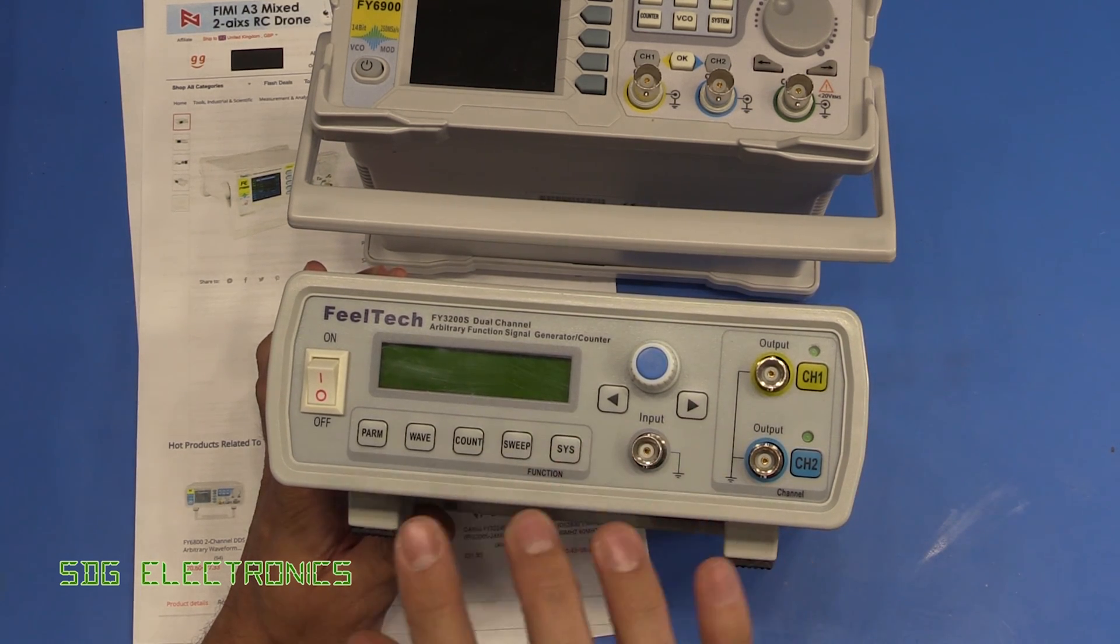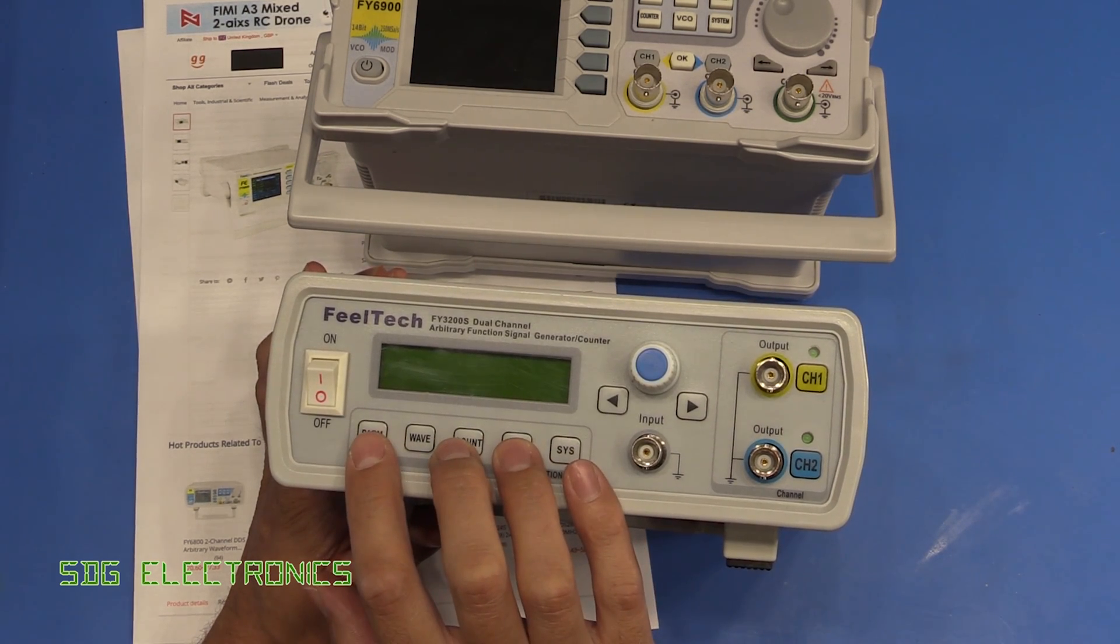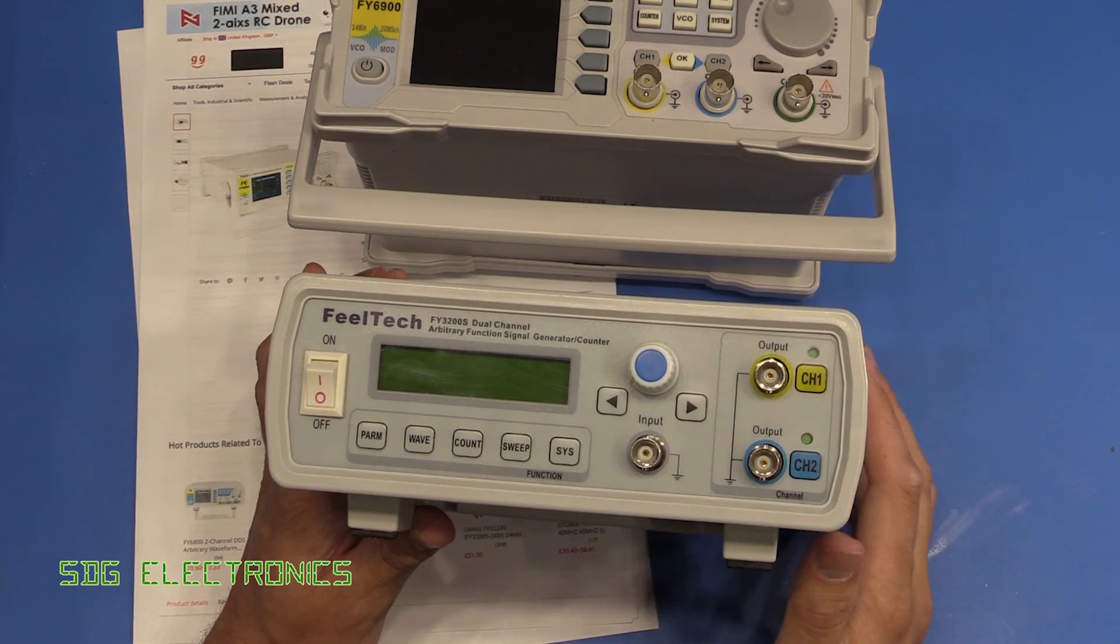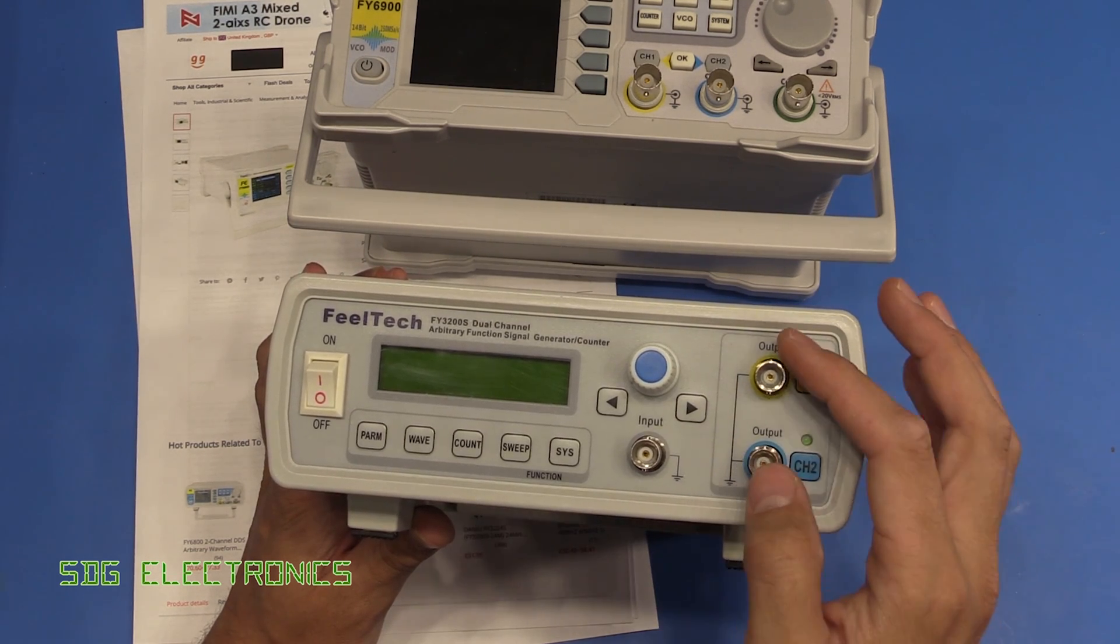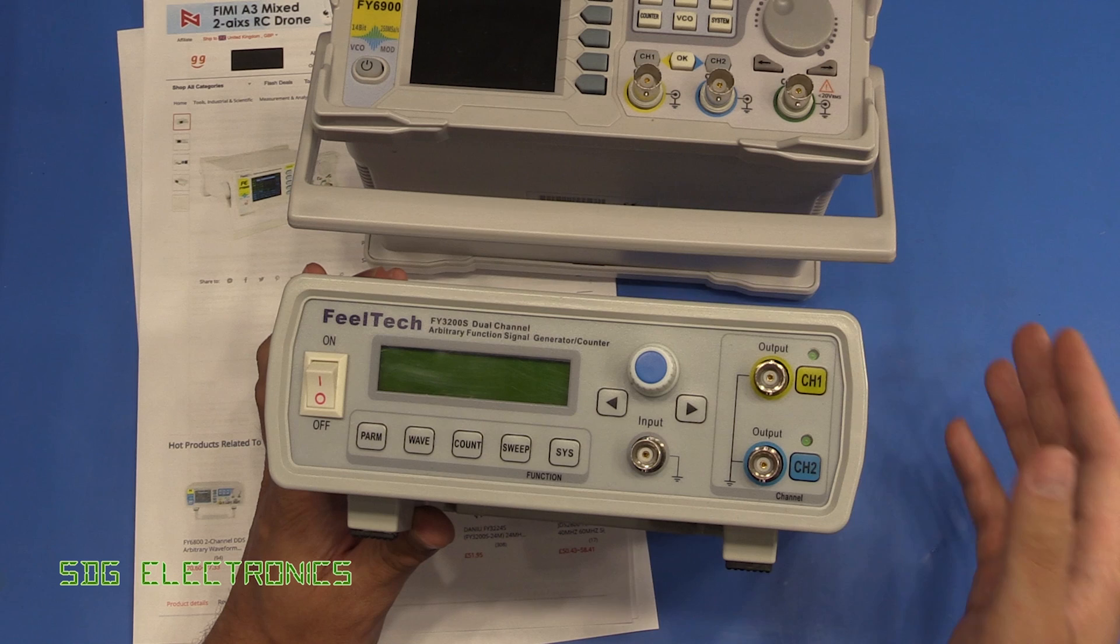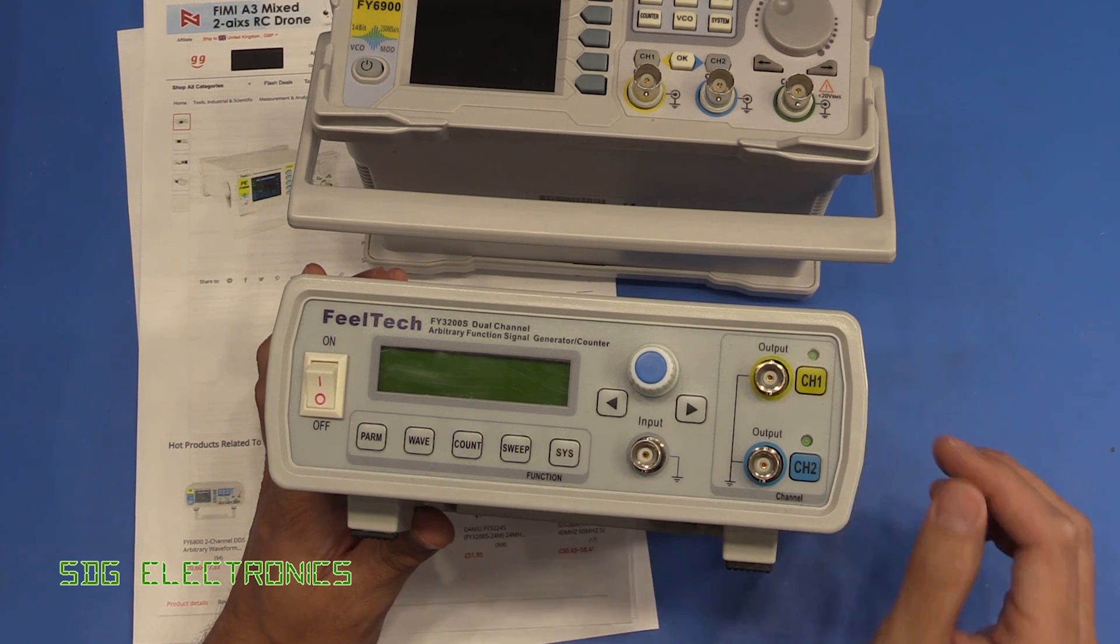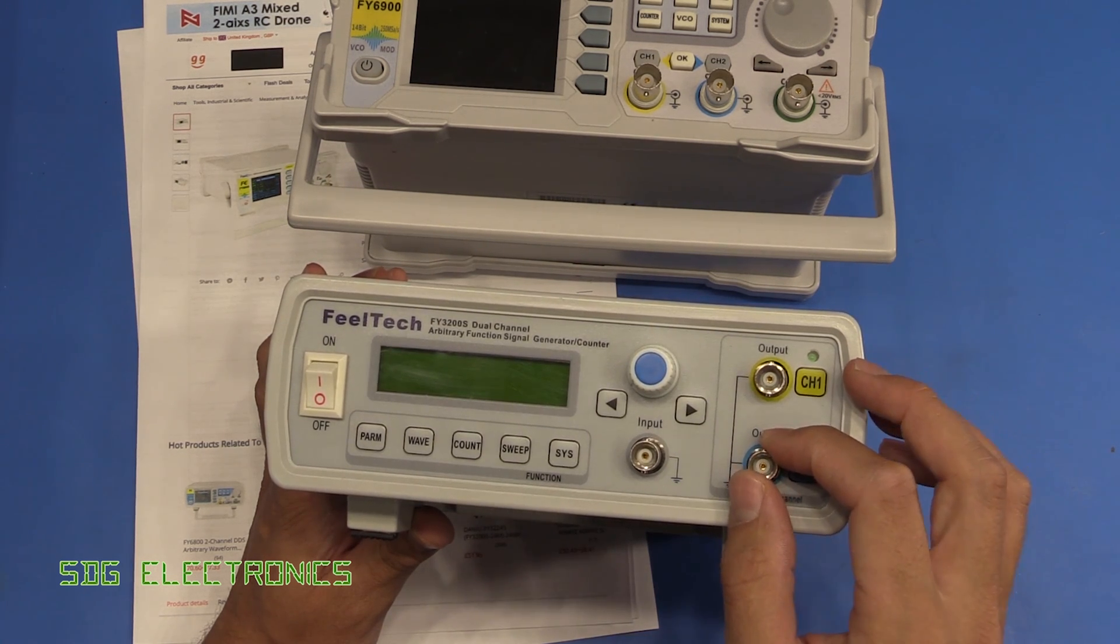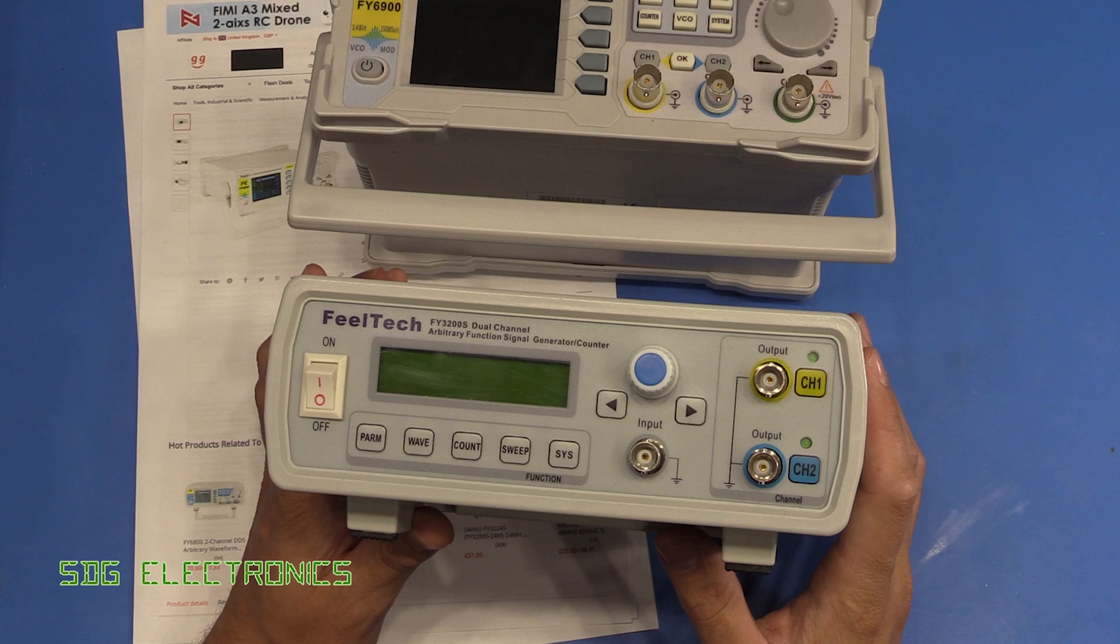The problem this particular signal generator had was the outputs were floating up at around 90 or 100 volts with a relatively high leakage current, so if you were probing around in some very sensitive circuitry there was a chance that you could damage your electronics.